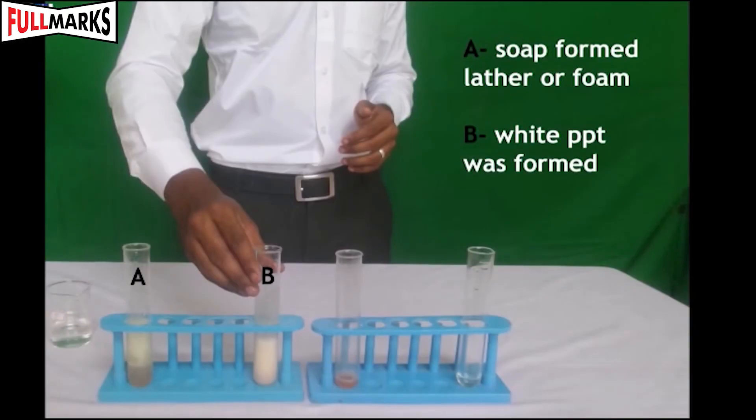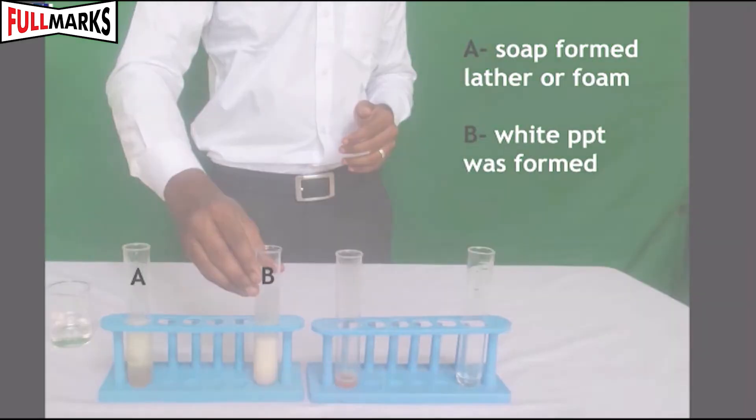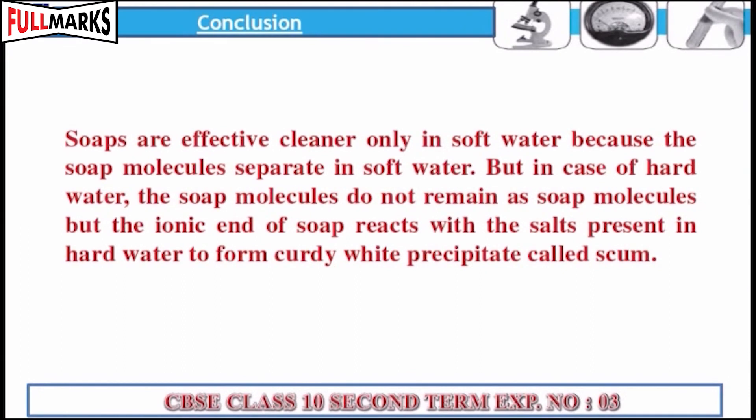Observations: In test tube A, soap formed lather or foam. In test tube B, white precipitate was formed with no lather or foam. Conclusion: Soaps are effective cleaners only in soft water because the soap molecules separate in soft water.